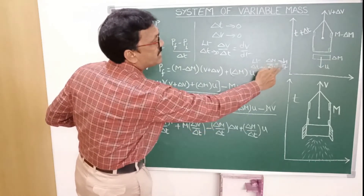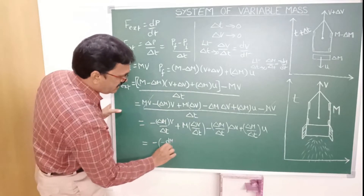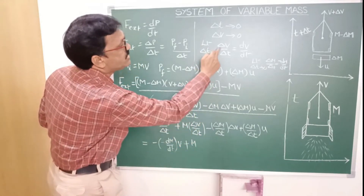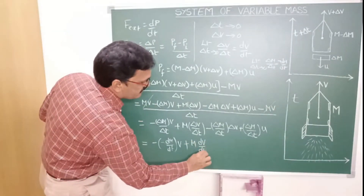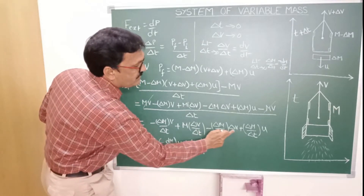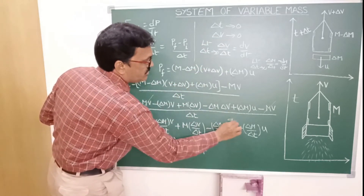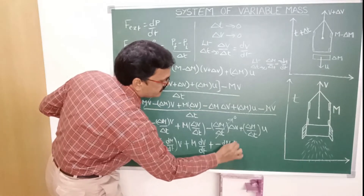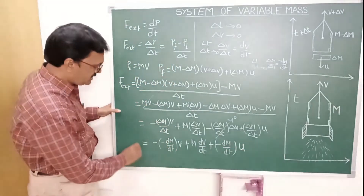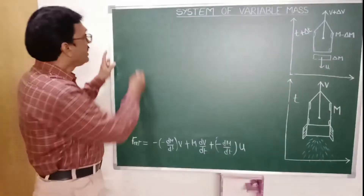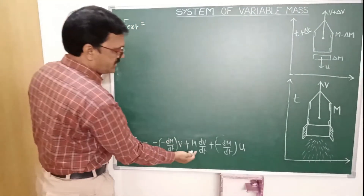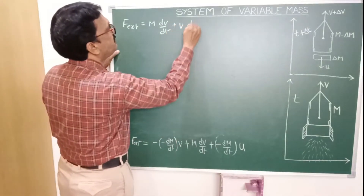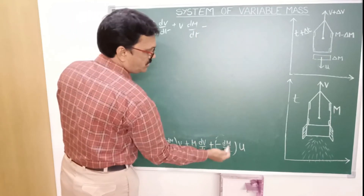So we get: minus dm by dt into v, plus m into dv by dt, minus delta m by delta t into delta v — this term goes to zero as delta v tends to 0 — plus delta m by delta t becomes minus dm by dt into u. Simplifying, f external equals m into dv by dt, plus v into dm by dt, minus u into dm by dt, which can be written as d by dt of mv minus u into dm by dt.